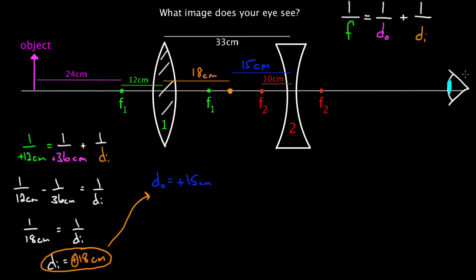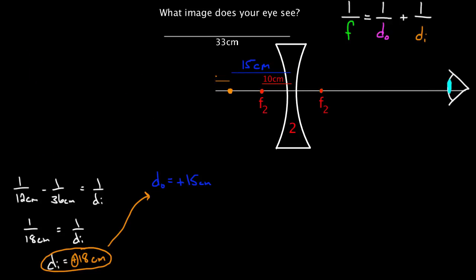We turn this into an object distance of positive 15 centimeters. Why positive? It's still on the left-hand side, opposite side from your eye — that's where objects are supposed to be. There is one case where you can get negative object distances: if the first lens had created an image way over on the wrong side — closer to your eye than the second lens — that would be a negative object distance. That didn't happen here. Our image is still formed on the correct side, so we treat this as positive 15.